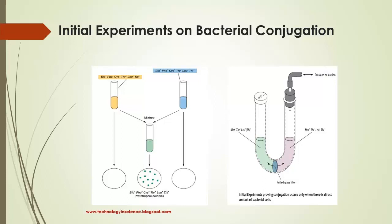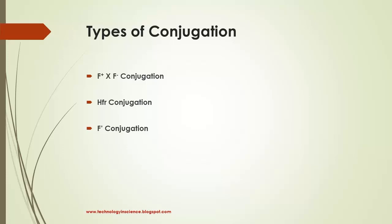Bacterial conjugation occurs in three different ways: one is F plus F minus mating, HFR conjugation and F prime conjugation. So let us see one by one in detail.